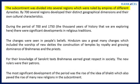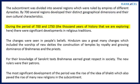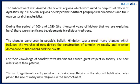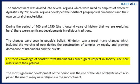The subcontinent was divided into several regions ruled by empires of different dynasties. By 700, several regions had developed distinct geographical dimensions and cultural characteristics. During the thousand years from 700 to 1750, there were significant developments in religious traditions. Hinduism saw great changes, including the worship of new deities, the construction of temples by royalty, and the growing dominance of Brahmanas and priests, who earned great respect in society for their knowledge of Sanskrit texts. New rulers were their patrons.